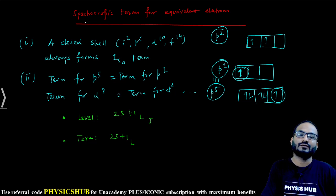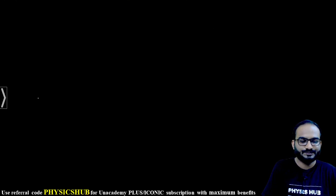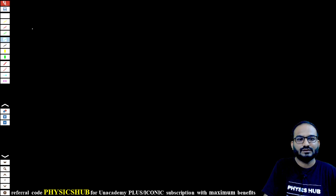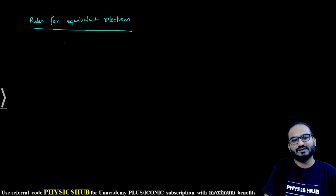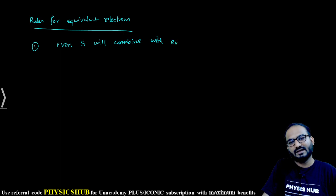How to decide the spectroscopic term for equivalent electrons? One example - we'll take D². But before that, let's write these rules for equivalent electrons. These rules are only applicable to equivalent electrons. First: even S will combine with even L. Number two: odd S will combine with odd L. This is only valid for equivalent electrons.